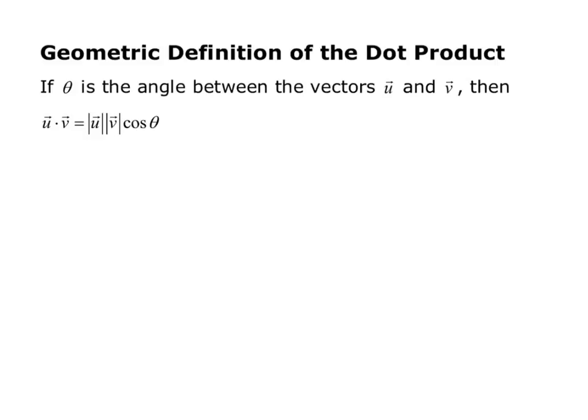Here is the geometric definition of the dot product. And what the geometric definition does is it says if theta is the angle between the vectors u and v, then u dotted with v equals the magnitude of u times the magnitude of v times cosine of theta.